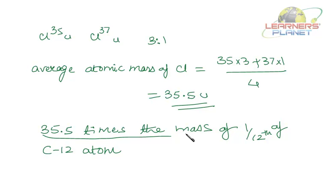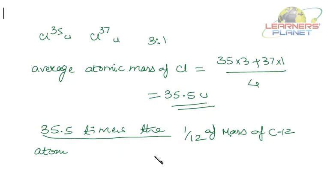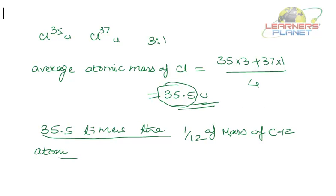That means the mass of chlorine is 35.5 times 1/12th the mass of the C-12 atom. This is how the average atomic mass is calculated first, and then the relative atomic mass is given.